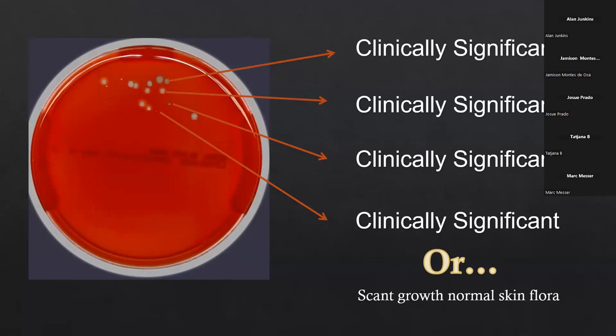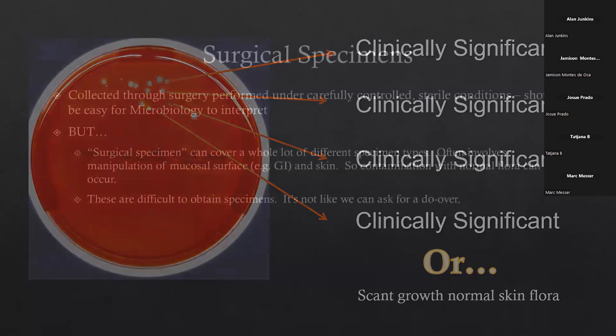So we are stuck in the lab sometimes with these difficult decisions to make. Do we work all those up? Do we report those bugs and possibly create an antimicrobial stewardship nightmare for our pharmacy friends? Or do we say this is just scanned growth of normal skin flora — we don't think any of this is clinically important — and then hope for the best when it comes to patient treatment?